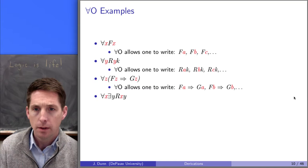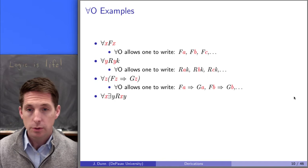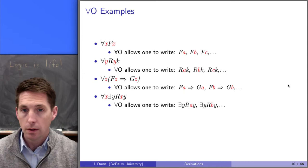Let's look at one that's slightly more complicated. Suppose we have something that says every x bears the R relation to some y — so maybe everyone loves someone. Again, the rule applies: we take off the universal quantifier and replace the bound variable x with any constant we'd like. So we can say there exists a y such that R(a,y), or there exists a y such that R(b,y), and so on.